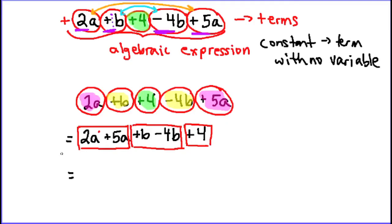So the next step is to combine what's in each box by adding or subtracting the coefficients — remember, the coefficients are the numbers in the front. Here I have 2 plus 5, which is 7a. Here I have 1 minus 4, which is negative 3b — remember, if there's no coefficient shown, it's a 1. And then the plus 4 all by itself. So my final answer is 7a minus 3b plus 4. I can't do anything else because a's and b's don't go together — they're not the same variable, and constants do not go with variables. So this is a completely simplified algebraic expression.